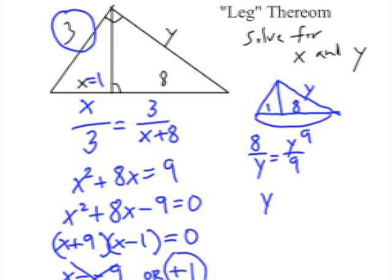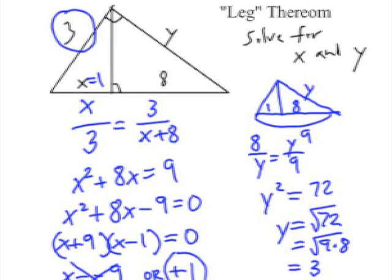Cross multiply to get Y squared equals 72, and when I get the square root, we can write it like this, square root of 72, which is really the square root of 9 times 8, simplifying the radical to be 3 radical 8. If I want it in decimal form, that would be about 8.5.